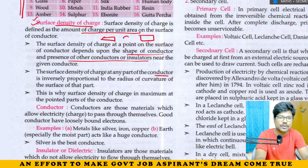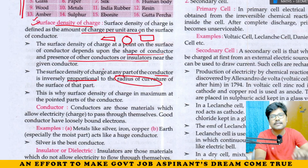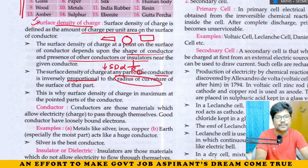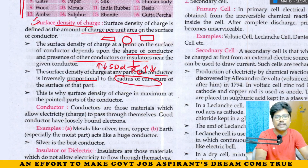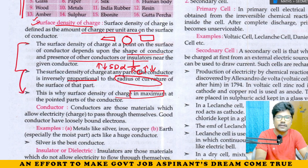Surface density of charge of a conductor or an insulator, whatever it is, is inversely proportional to the curvature. Where curvature is less, surface density is higher — that is, at pointed parts of the conductor. That's it. These are the two important points.